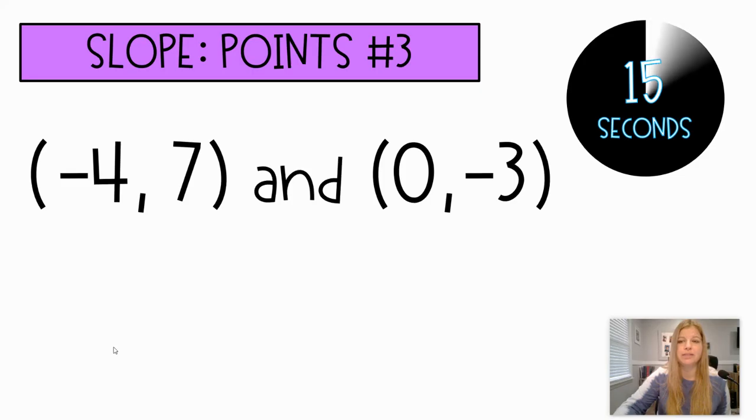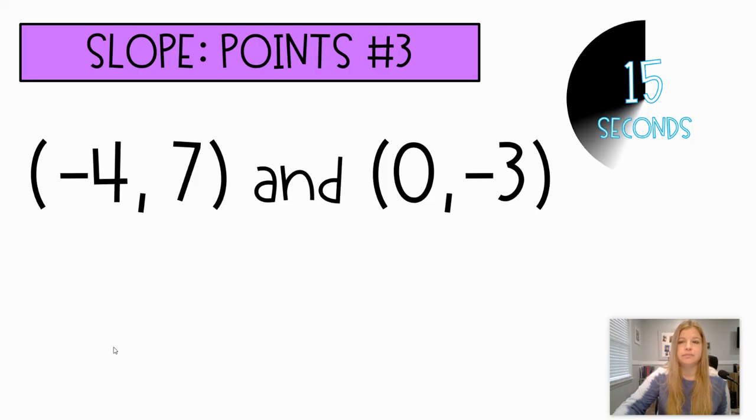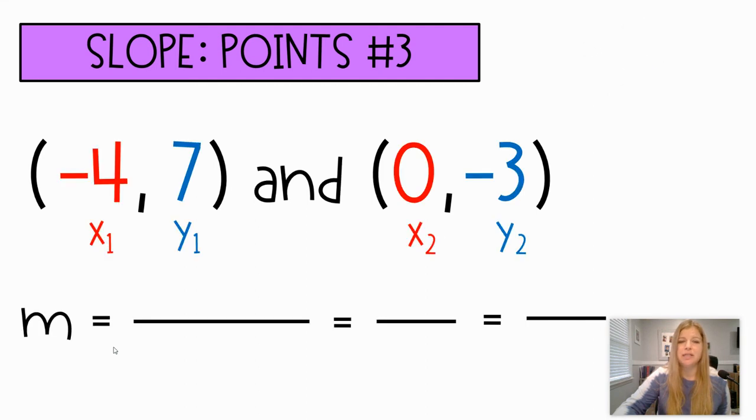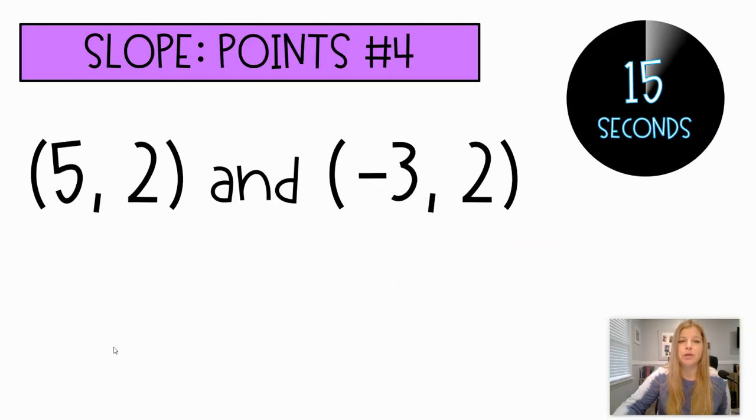Negative 4, 7, and 0, negative 3. And hopefully you were just extra careful with our signs here. So negative 3 minus the 7 over 0 minus a negative 4. So negative 3 minus 7 is negative 10. 0 minus that negative 4 really means 0 plus 4, which is 4. And negative 10 over 4 simplifies to negative 5 over 2. We've got two more to go.